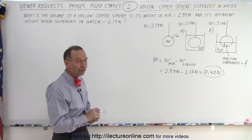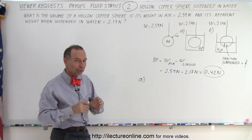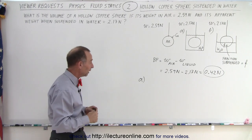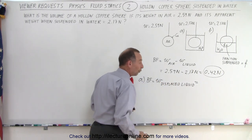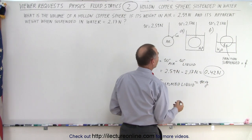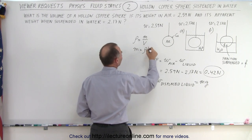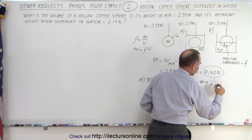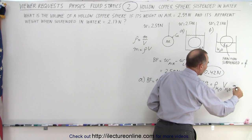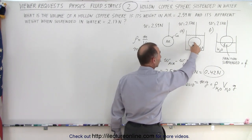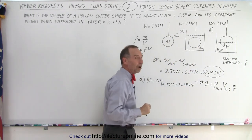Now to find the volume, let's start with Case A, where the sphere is completely submerged. The entire volume of the sphere equals the volume of liquid displaced. The buoyancy force equals the weight of the displaced liquid, which is mass times g. Since density equals mass over volume, mass equals density times volume, so the buoyancy force equals the density of the liquid times the volume of displaced liquid times g. Since the sphere is entirely submerged, the volume of displaced liquid equals the volume of the sphere.